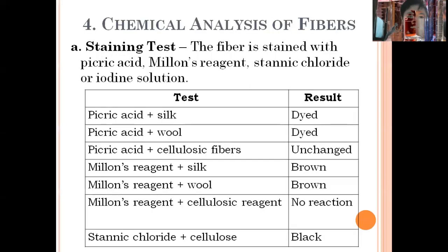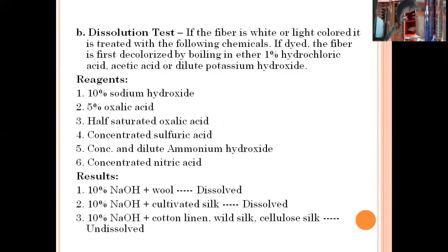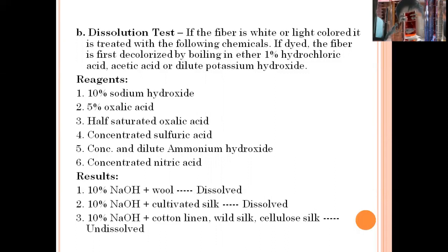For chemical analysis of fibers, we have the staining test — chemicals are added and the resulting color indicates whether the fiber is from an animal or vegetable source. We also have the solution test — a chemical is added, and if the fiber is dissolved or undissolved, it indicates positive identification for wool, silk, cotton, linen, wild silk, or cellulosic silk.